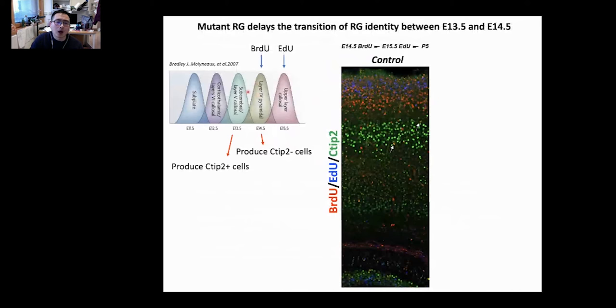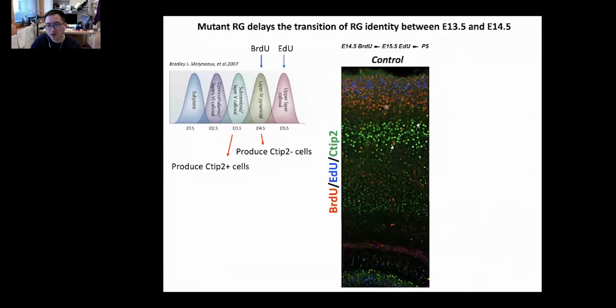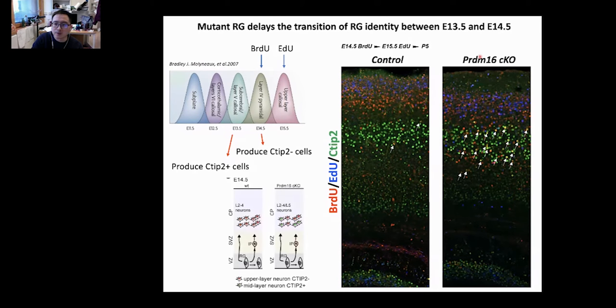We injected BrdU into pregnant females with embryos at around E14. At this stage, radial glia stopped producing CTIP2 positive cells, so neurons born on this date will be labeled as BrdU positive CTIP2 negative. As expected, in the control P5 brain, you see nearly no double positive cells in the cortex. However, in the conditional knockout, you see an increasing number of double positive cells, suggesting that when you delete PRDM16, the radial glia still produce CTIP2 positive cells. So there is indeed a delay.